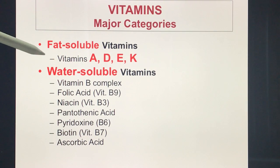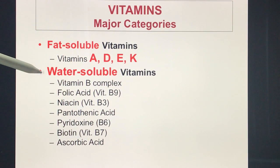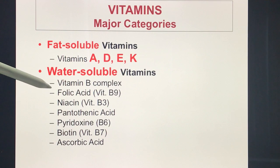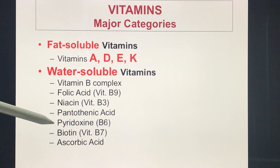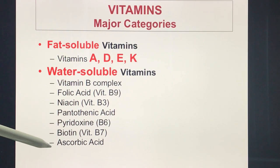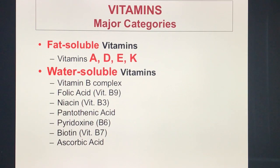Under the fat-soluble vitamins we have A, D, E, and K. Under the water-soluble vitamins we have B complex, which is broken down into folic acid, niacin, pantothenic acid, pyridoxine, and biotin — and the last water-soluble vitamin is ascorbic acid. Take time to go over the slide.